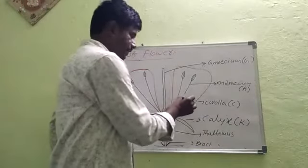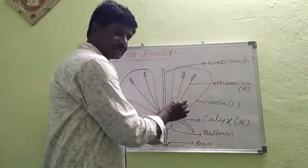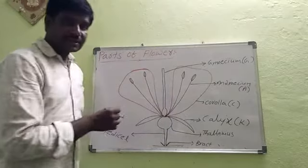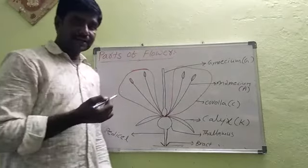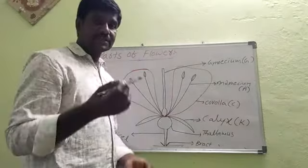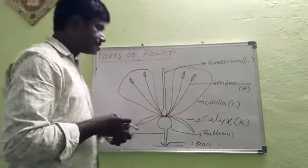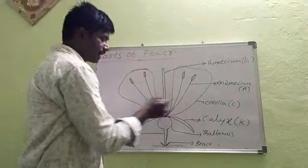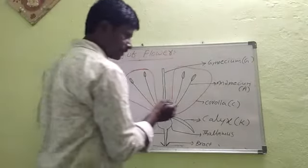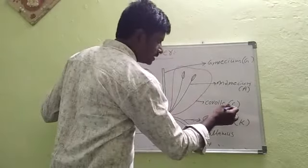Corolla is the second floral part. It is present in different colors, including white, blue, purple, and red. Corolla gives attraction to the flower. The symbol of corolla is C.